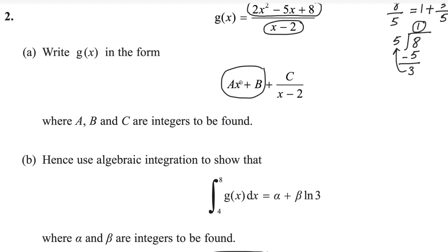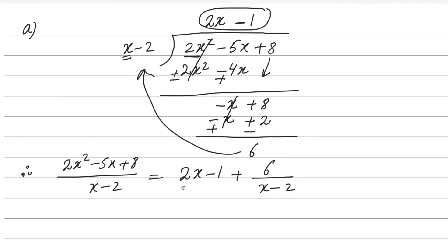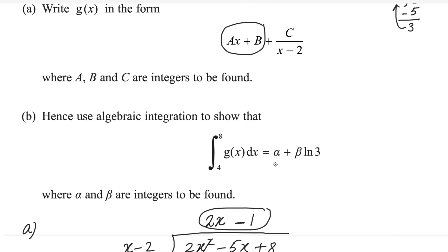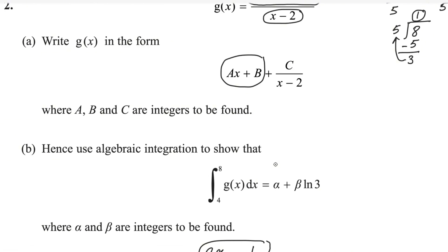The coefficient of x is a, and b is the other constant value. Therefore we can write: a equals 2, b equals negative 1, and c equals 6. Comparing this expression with the required form gives us the values of a, b and c. The first part is done.